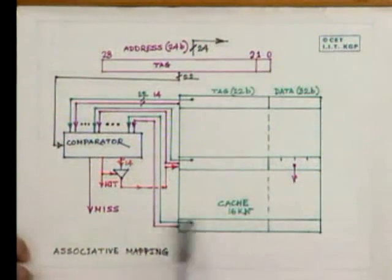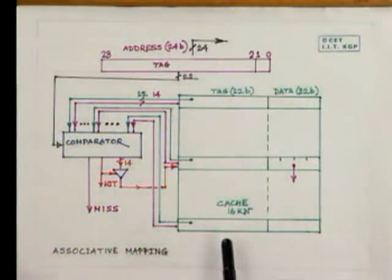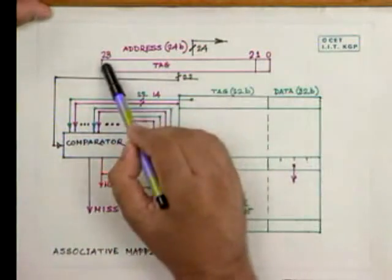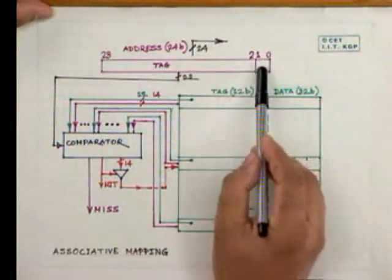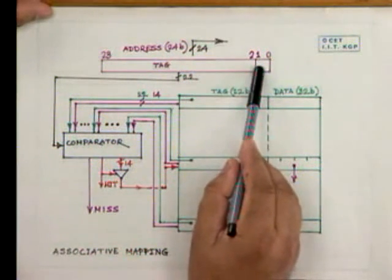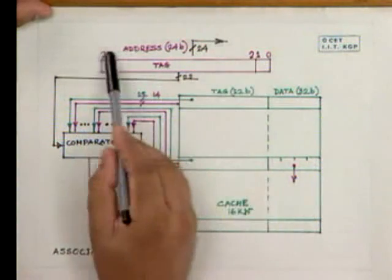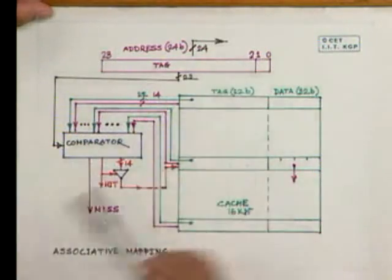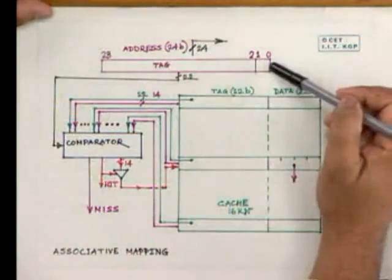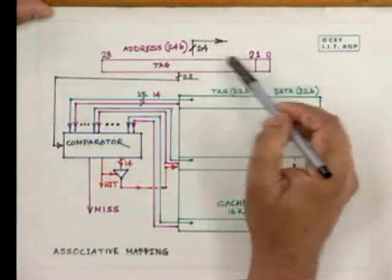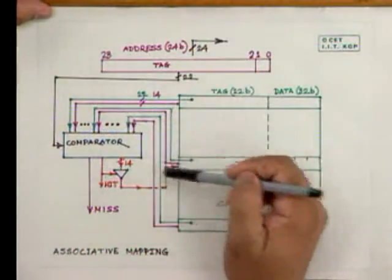Now let us see another mapping: associative mapping. Here, this 24-bit address is once more divided into two. Bits 2 to 23 give a 22-bit word or block address. Just one clarification: this 24-bit or 22-bit or the cache size that we are talking about are essentially examples. In practical implementations the sizes will vary, depending upon the system. The total address may be much higher and the cache may also be much larger or smaller.